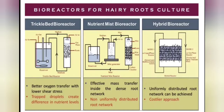Bioreactors used for hairy root culture include the trickle bed bioreactor, nutrient mist bioreactor, and hybrid bioreactor. The trickle bed bioreactor provides better oxygen transfer with lower shear stress, but trap droplets create differences in nutrient level. The nutrient mist bioreactor has effective mass transfer inside dense root networks, but the disadvantage is a non-uniformly distributed root network. The hybrid bioreactor achieves a uniformly distributed root network, but its disadvantage is that it is costly.